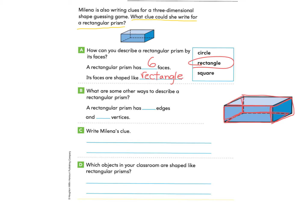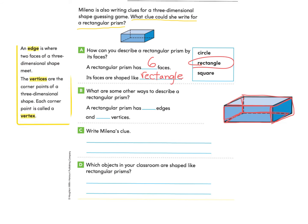Now let's look at part B: What are some other ways to describe a rectangular prism? Here's a reminder about the words edge and vertex. The edge is where two faces of a three-dimensional shape meet. Let's count: one, two, three, four, five, six, seven, eight, nine, ten, eleven, twelve. There are 12 edges.